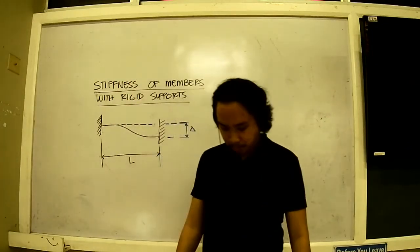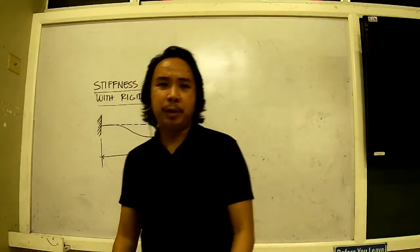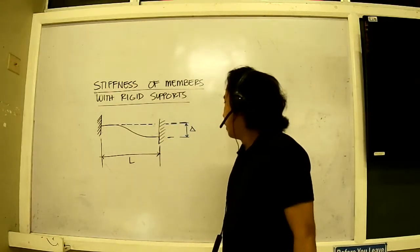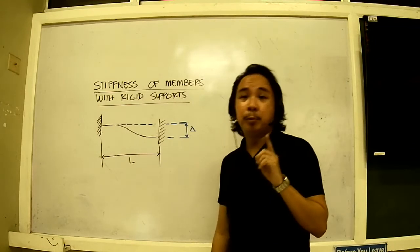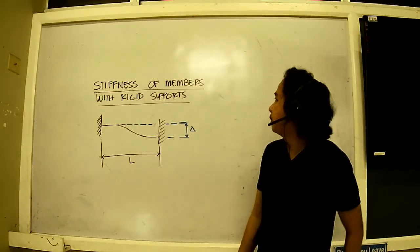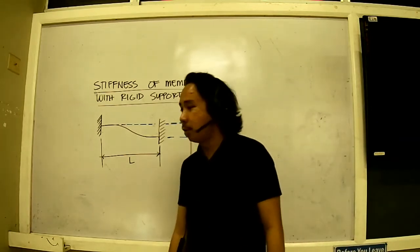Okay, so right now before we can proceed to solving a sample problem, we must first have to deal with one more equation. We need to define the stiffness of members with rigid supports.